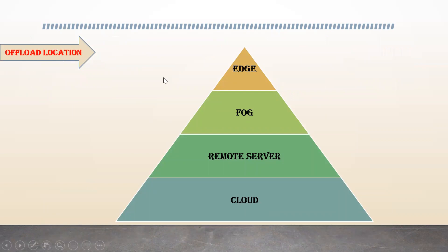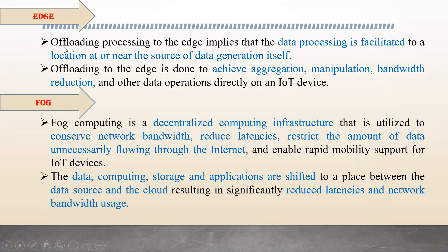The four offload locations are edge, fog, remote server, and cloud. Edge offloading means data processing is facilitated to a location near to, or at, the source of data generation itself. Offloading to the edge achieves aggregation and manipulation of data, and also bandwidth reduction, because processing happens close to where the data is generated.